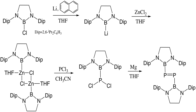Selected reactivity of diphosphenes is summarized in the following picture, including oxidation, reduction, sulfurization, polymerization, carbon addition, halogenation, photolysis, and coordination to transition metals.